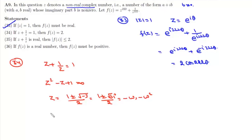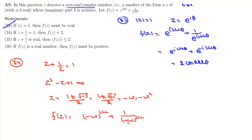Computing f(z): f(z) = (-ω)^222 + 1/(-ω)^222. Since 222 is even and a multiple of 3, this evaluates to 1 + 1 = 2. The result is the same for -ω² as well. Therefore, statement 34 is also correct.